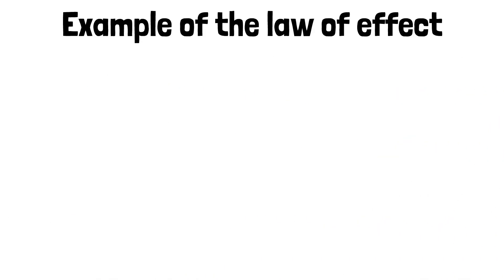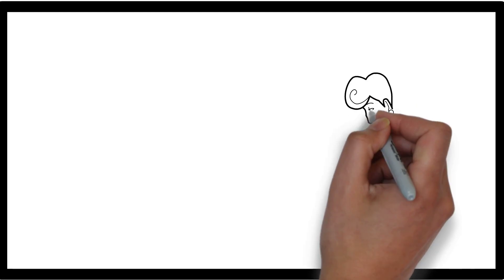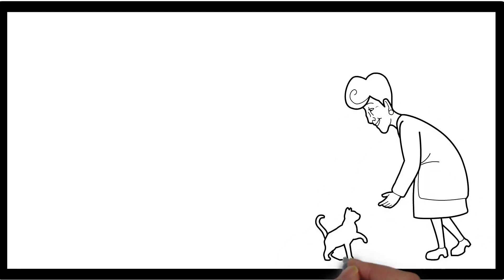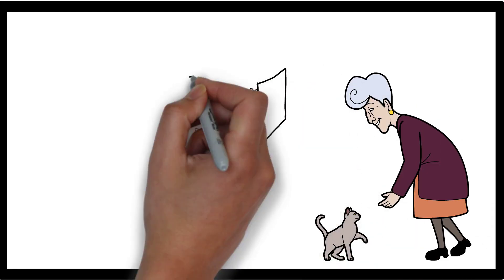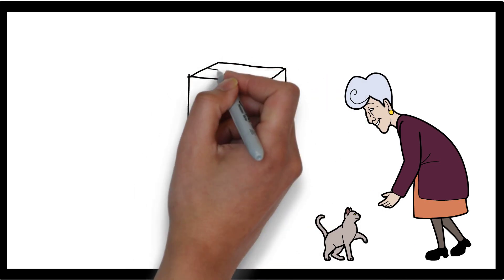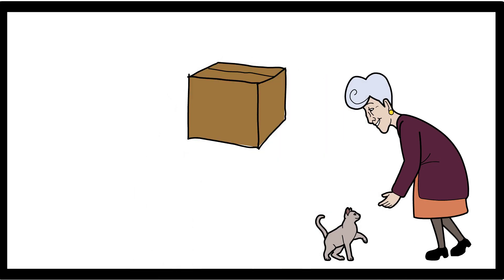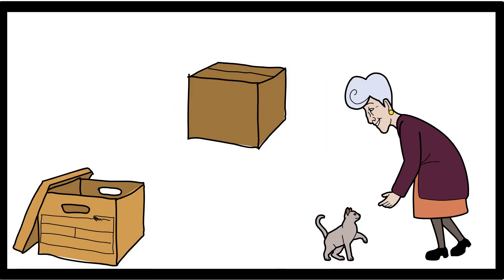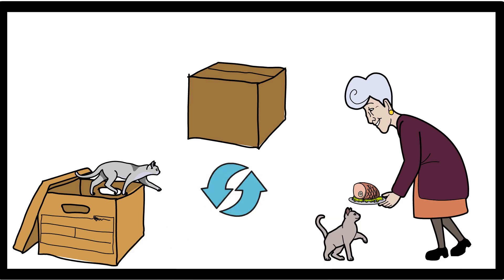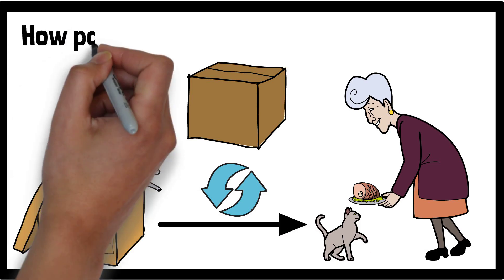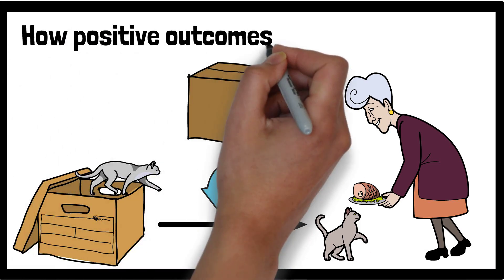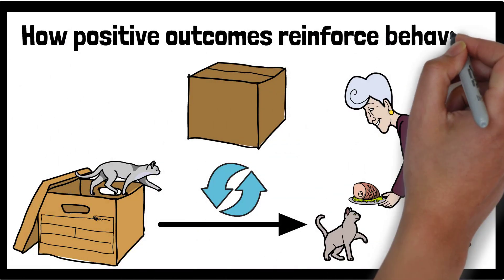One classic example of the law of effect is Thorndike's experiment with cats. He placed cats in a puzzle box that required them to perform a specific action, such as pulling a lever, to escape and receive food. Over time, the cats learned to repeat the successful actions that led to rewards, demonstrating how positive outcomes reinforce behaviour.